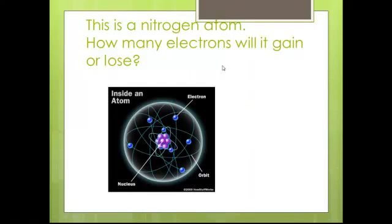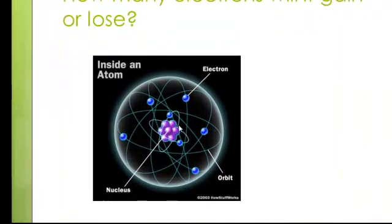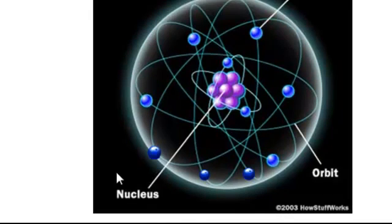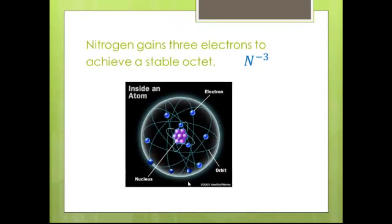This is a nitrogen atom. How many electrons will it gain or lose? Well, you can see the first shell here has two. That's good. But this second shell has one, two, three, four, five. It needs eight, so it's going to gain three more. There's the one. There's the other. And there's the last one. Now it would have all eight.